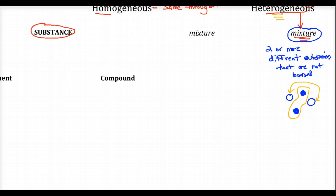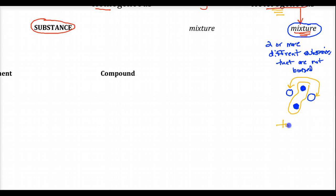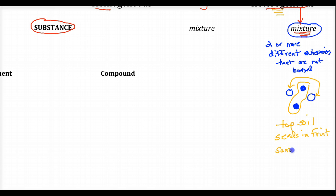Examples of heterogeneous matter: topsoil, seeds in a watermelon, seeds in a fruit, and sand and water. Sand and water really don't mix — they separate and don't bond.